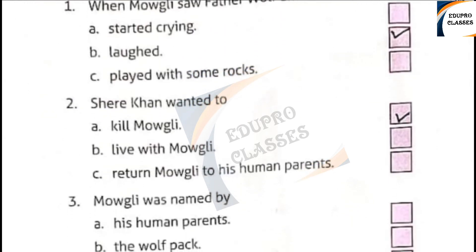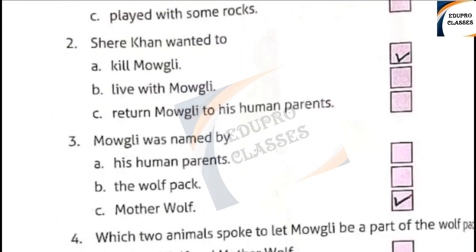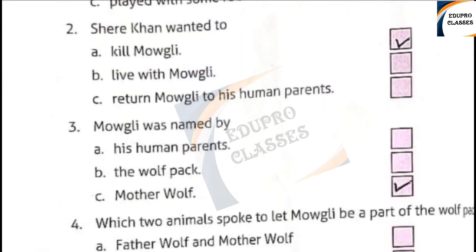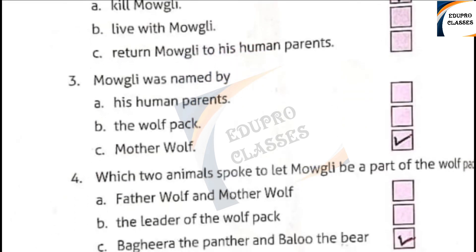Question 3: Mowgli was named by — the wolf pack, or mother wolf. The answer is C: mother wolf.